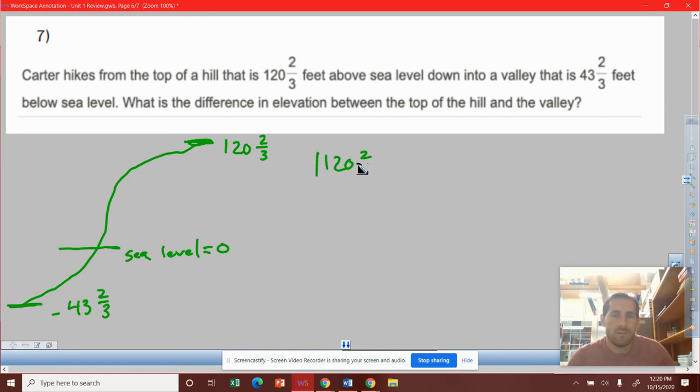We've got 120 and two-thirds in the absolute value plus negative 43 and two-thirds as an absolute value. So what do those equal? You got 120 plus two-thirds plus 43 and two-thirds. I'm just going to take this in chunks.